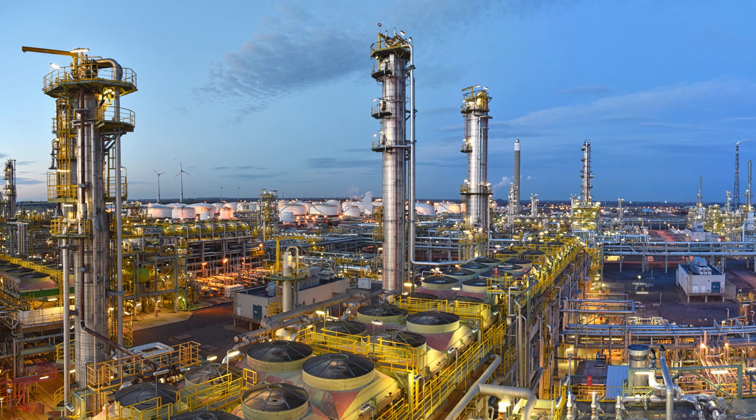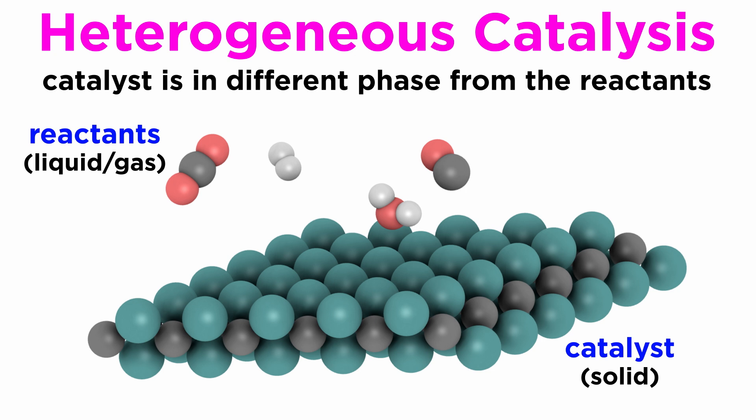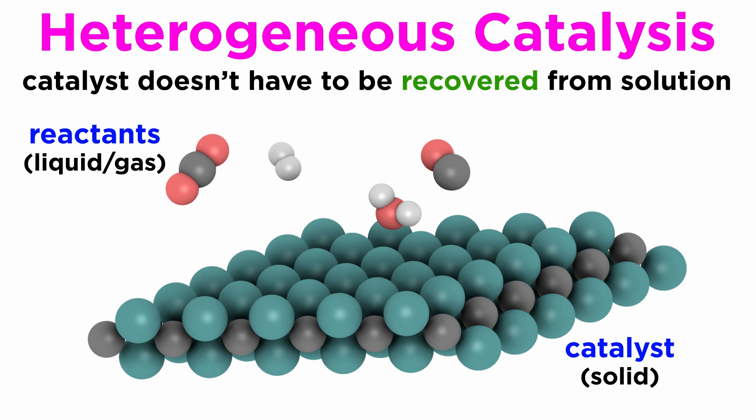In the chemical industry, much simpler products are typically prepared, and these can accept much more robust conditions. The type of catalysis usually exploited in the chemical industry is called heterogeneous catalysis, because the catalyst is in a different phase from the reactants. Usually the catalyst is part of a solid phase, and the reactants are in solution or in the gas phase. The main advantage of this type of catalysis is the stability of the catalysts, which can usually be recycled, given that they do not have to be recovered from solution.